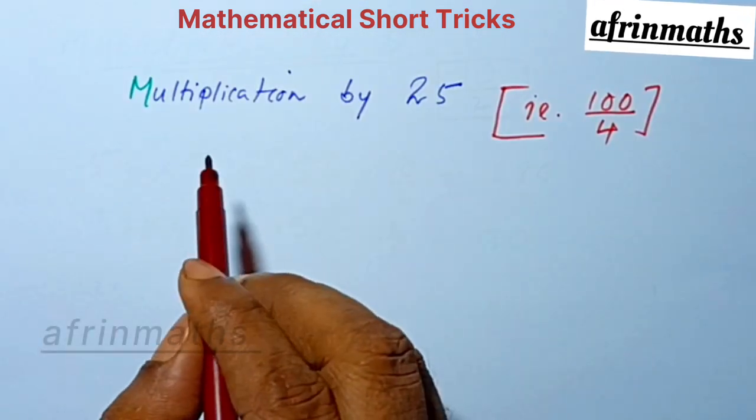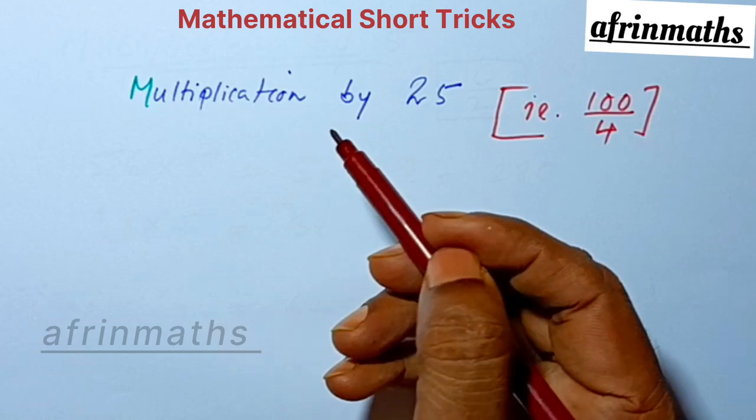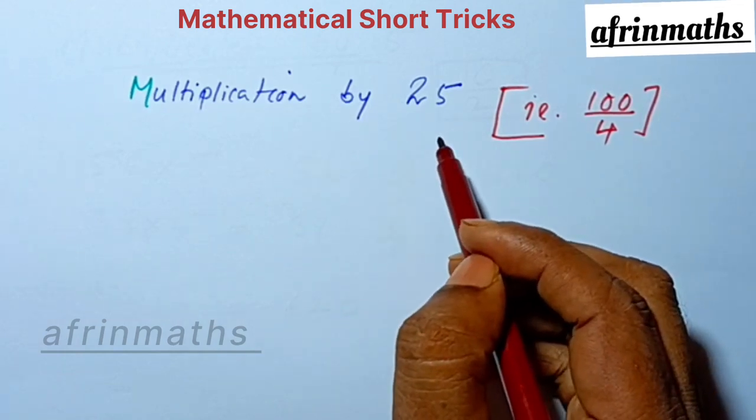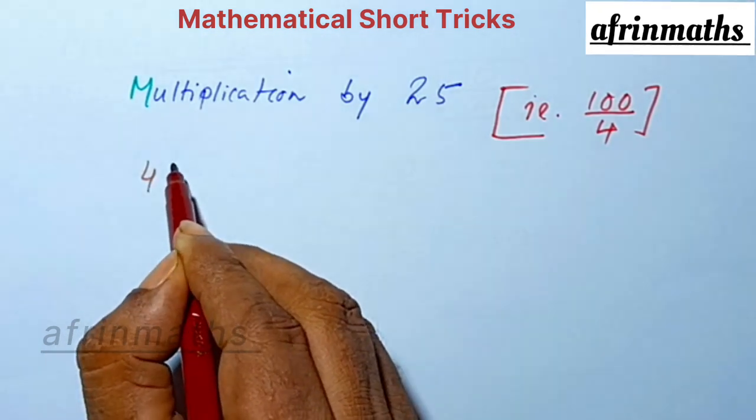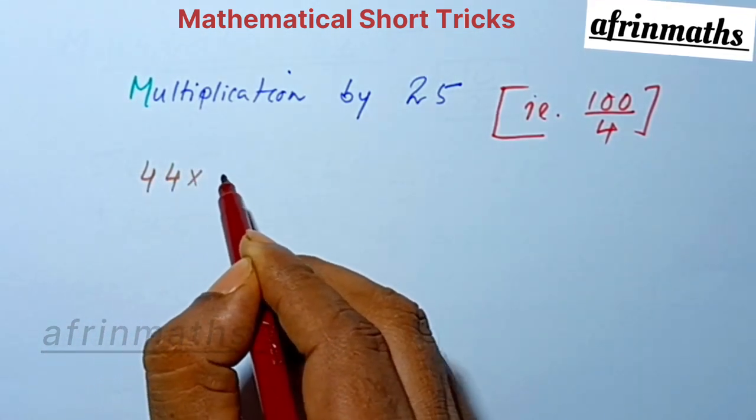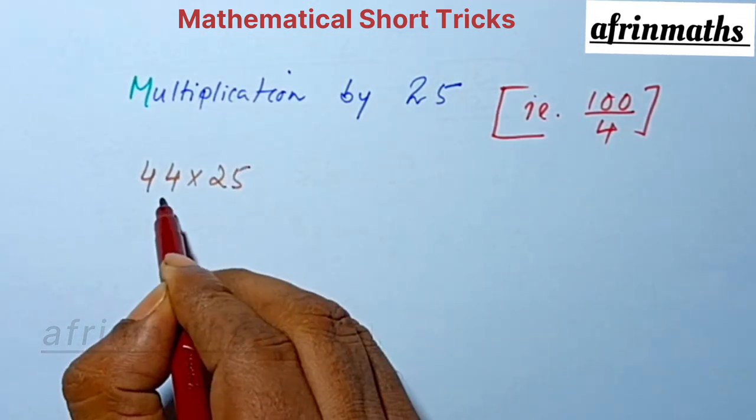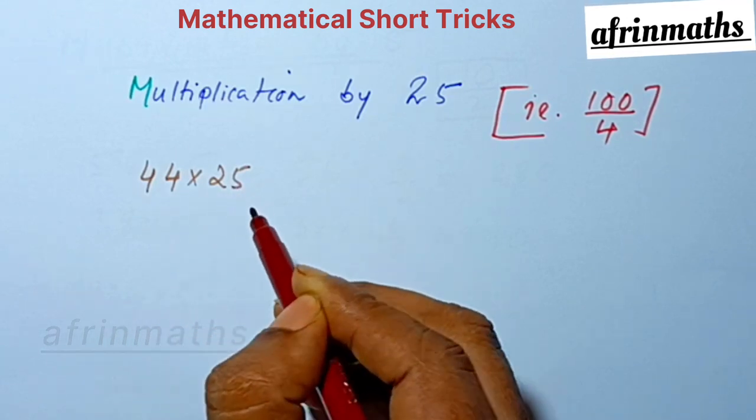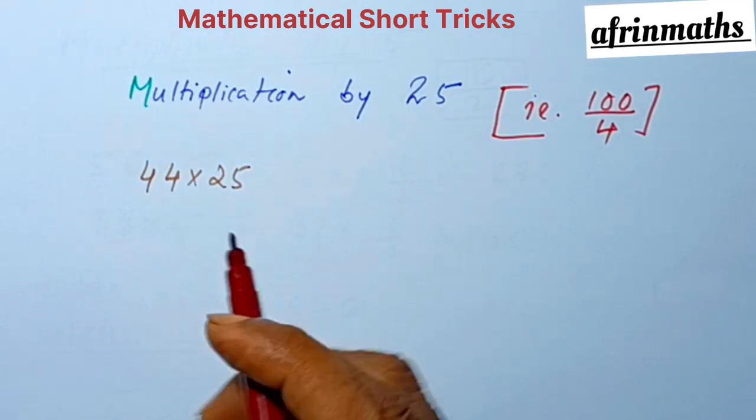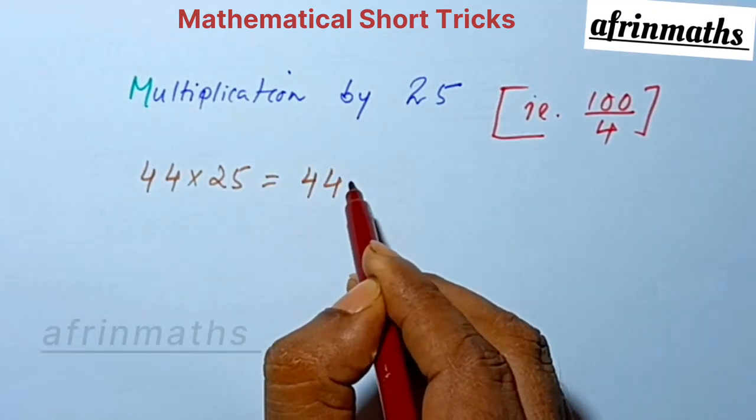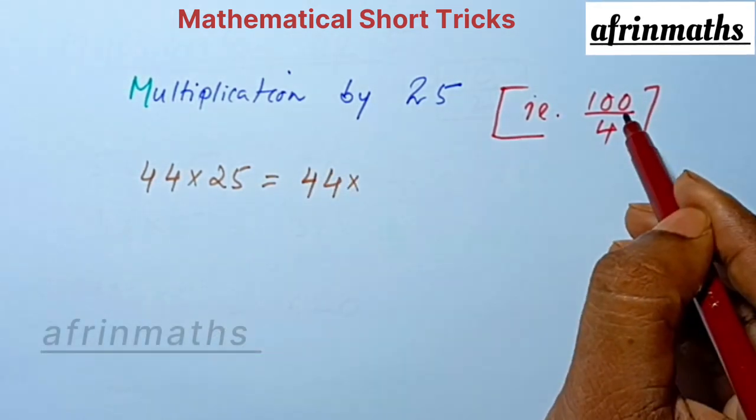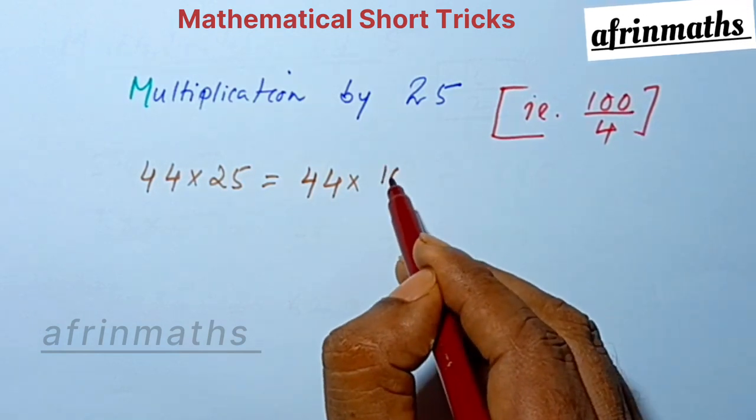Hello guys! Today let us learn how to multiply a number by 25. We just need to see a trick here. Suppose we are multiplying 44 by 25. Instead of writing 25, we will replace 25 by 100 by 4. This is the trick here.